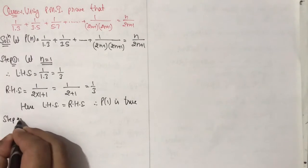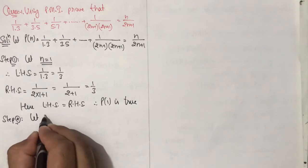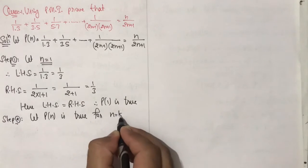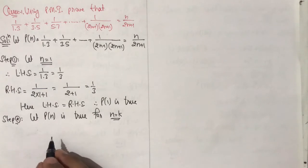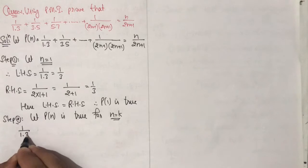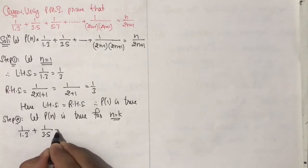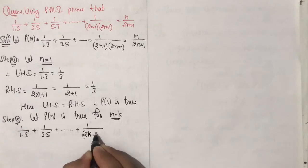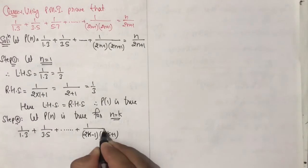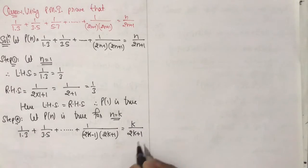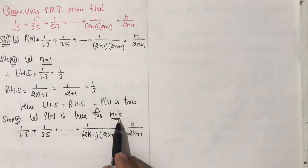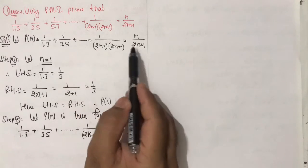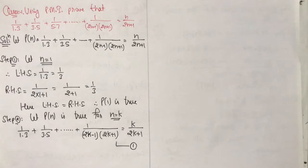Step 2: Let P(n) be true for n = k. We have assumed that 1/(1×3) + 1/(3×5) + ... + 1/((2k−1)(2k+1)) = k/(2k+1). If we replace n with k on both left-hand side and right-hand side, both become equal. Call this equation (1).